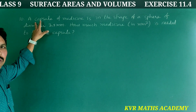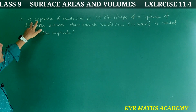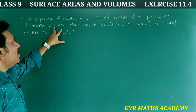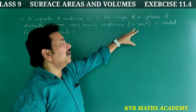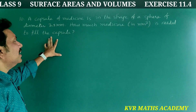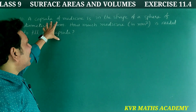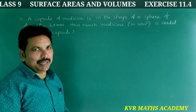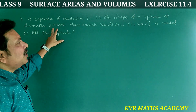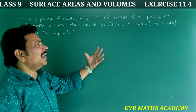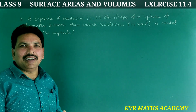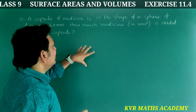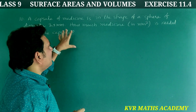Question 10, the final question in this exercise and chapter: A capsule of medicine is in the shape of a sphere of diameter 3.5 millimeters. How much medicine in millimeter cube is needed to fill the capsule? The diameter d equals 3.5 millimeters.